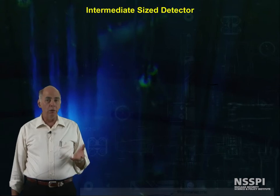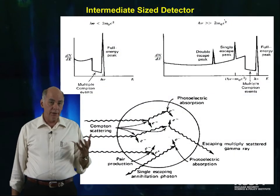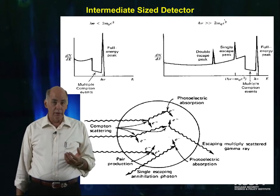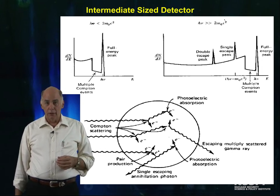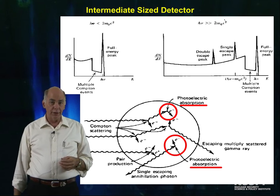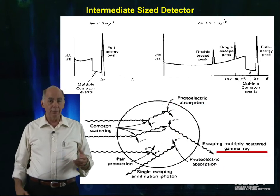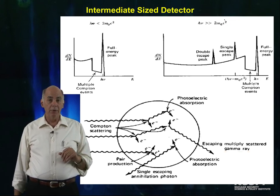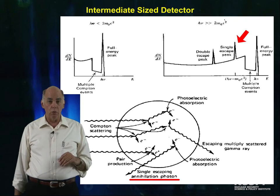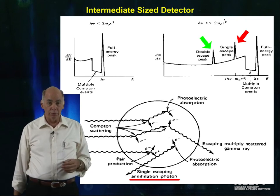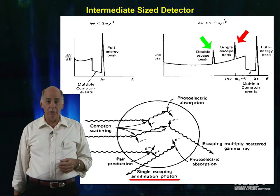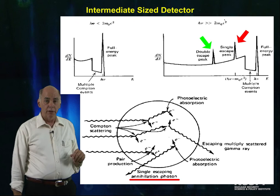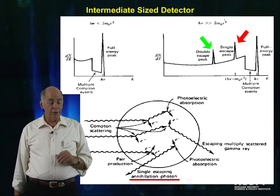In the real world, we live with neither the small-sized detector model nor the large-sized detector model, but somewhere in between. Almost always, we capture the photoelectric events. We lose some of the scattered Compton gamma, but not all of them. In pair production, we sometimes lose one of the 511s. Sometimes we lose both. Sometimes we capture them both. This graph shows the resulting spectrum that is similar to what you'll see in the lab.